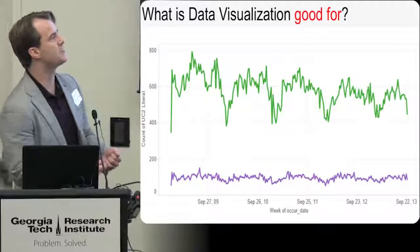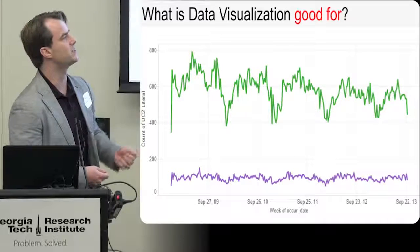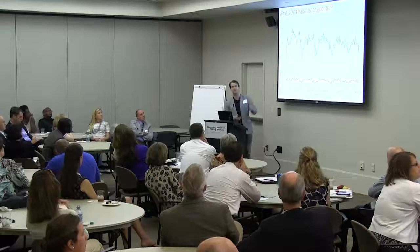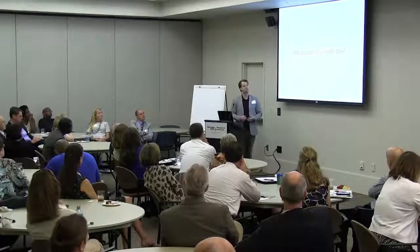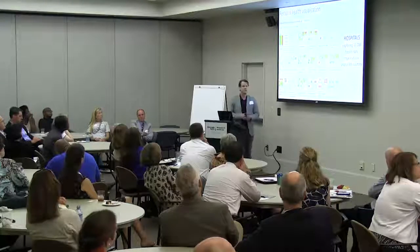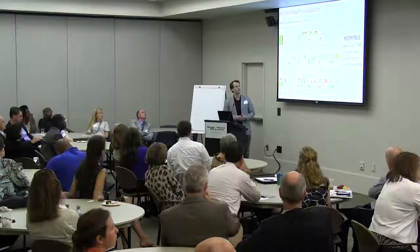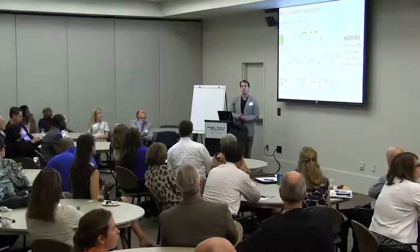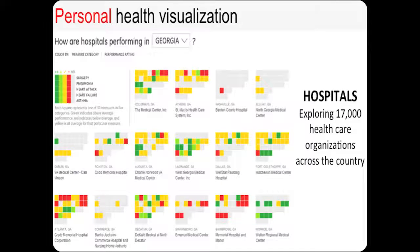This is the same data — crime in Atlanta. We can see very clear seasonal trends where crime dips down every winter and then goes back up in the summer as the heat rises. What about personal health data? This is another representation — 17,000 healthcare organizations across the country. We see representations for different types of measures, things they're doing well and not doing well. This is an example of personal health visualization because it's trying to help you make an informed personal choice.